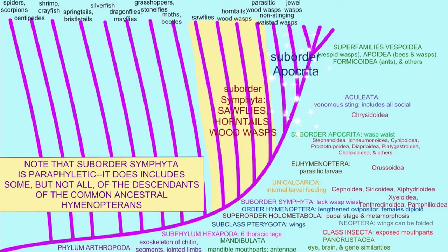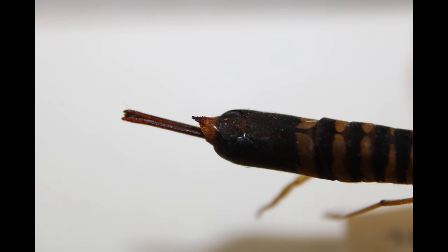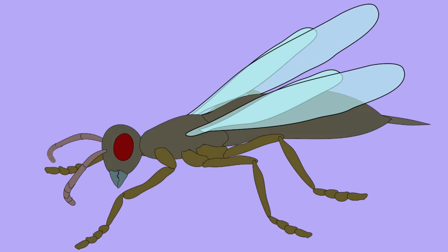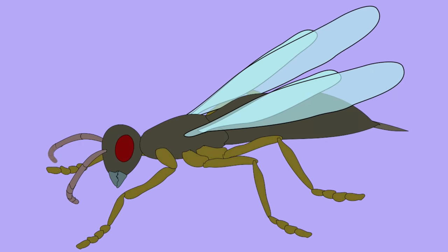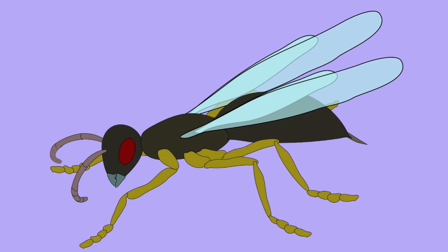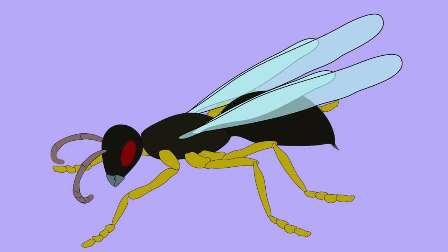While sawflies, horntails, and wood wasps do not make up the majority of the enormous order Hymenoptera — only about 8,000 of the 150,000 species — nevertheless, these were the ancestral members of the group. The first hymenopterans were in the suborder Symphyta, and it was gradual changes in Symphyta which then gave rise to the characteristic wasps with the narrow waist, and from them would evolve bees and ants.